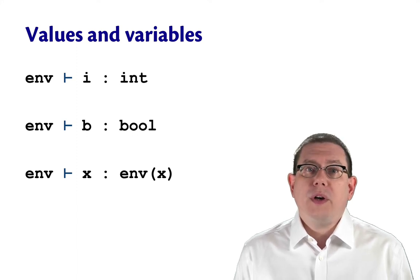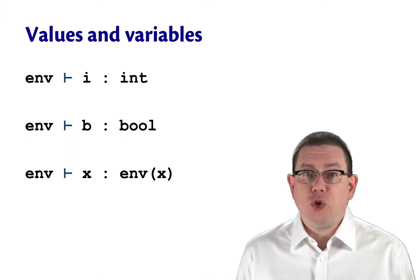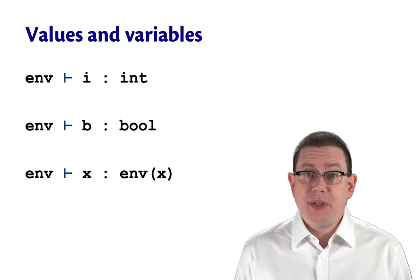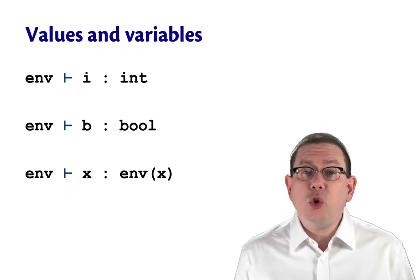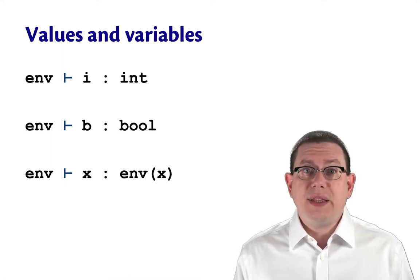Furthermore, the type of a variable name is going to be whatever it's bound to in that environment. Of course, if the variable name is not bound in the environment, then there's no way to look it up. So we'd never be able to conclude that a variable has a type if that variable is not present in the static environment.